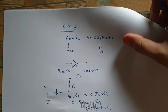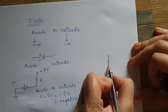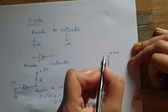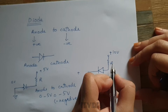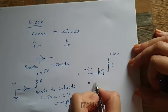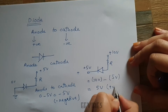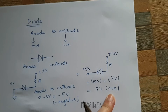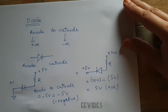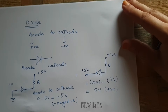Now let's consider another case where the anode is connected to a ten volt source through a resistor R, and the cathode terminal is at plus five volt potential. If you calculate the potential from anode to cathode, it comes out to be ten volts minus five volts, which equals five volts — a positive value. Since the anode-to-cathode potential is higher, this diode is forward biased and will conduct.